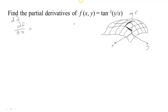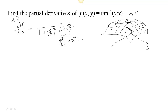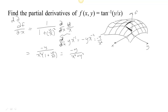The partial derivative with respect to x: the derivative of arctan is 1 over 1 plus the inside squared, times the derivative of the inside. The derivative of y over x with respect to x treats y as a constant times x to the negative 1, so that's negative y x to the negative 2, or negative y over x squared. So the partial with respect to x is negative y over x squared, all over 1 plus y squared over x squared, which simplifies to negative y over x squared plus y squared.